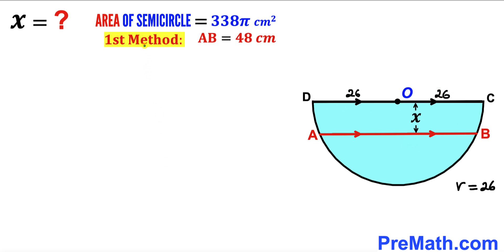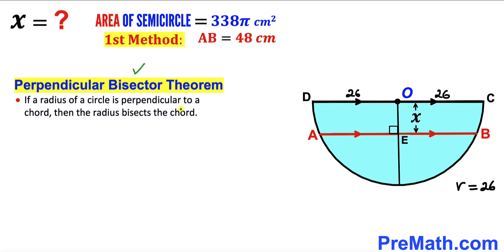For the first method, I have dropped a perpendicular from center O. Recalling the perpendicular bisector theorem: if a radius is perpendicular to a chord, it bisects that chord. So this perpendicular bisects chord AB into two equal parts, AE and EB. Since AB = 48 cm, each half is 24 cm.